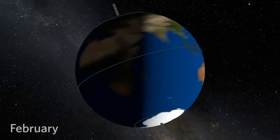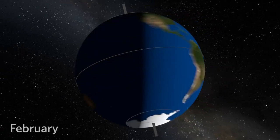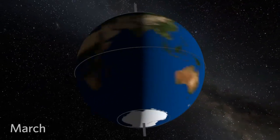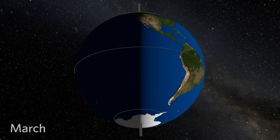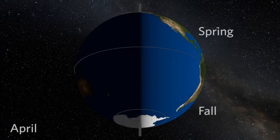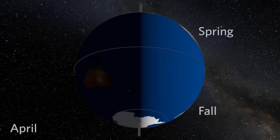As Earth orbits the Sun, we move towards spring in the Northern Hemisphere. Now Earth is tilted neither toward nor away from the Sun, as day and night are about equal in length.